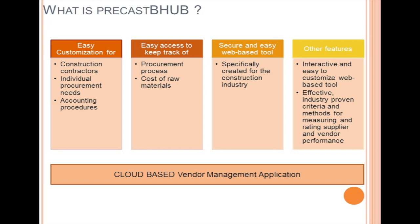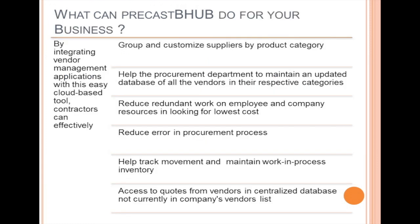It's an interactive and easy-to-customize web-based tool to manage the procurement process, and it uses effective, industry-proven criteria and methods for measuring and rating vendor performance. By integrating vendor management applications with this easy web-based tool, contractors can effectively categorize suppliers, reduce errors in procurement, track movement, and maintain work in inventory. Our application groups and customizes suppliers by product category and helps the procurement department to maintain an updated database of all the vendors in their respective categories.